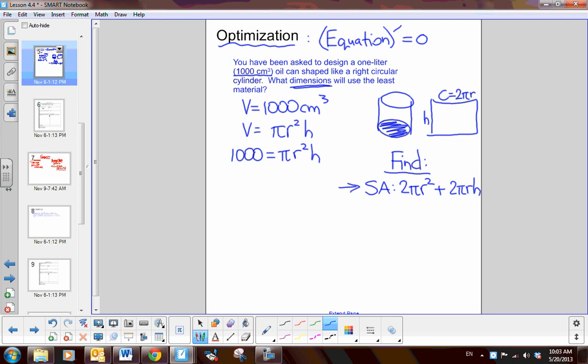Now my goal is to rewrite this in terms of one variable and take the derivative and set it equal to zero. How am I going to write it in terms of one variable? Well, I'm going to go back to the given information, and I'm going to solve this equation for one of the variables. h is much easier to solve for than r. So 1,000 over pi r squared is equal to h. So I'm going to substitute that for h. 2 pi r squared plus 2 pi r, and then h is 1,000 over pi r squared.